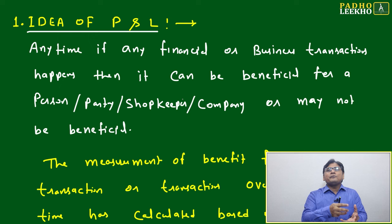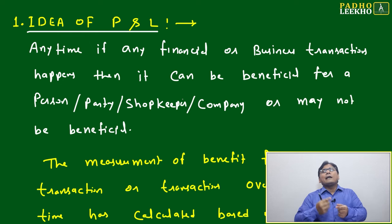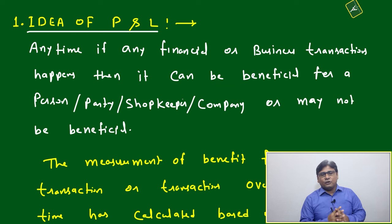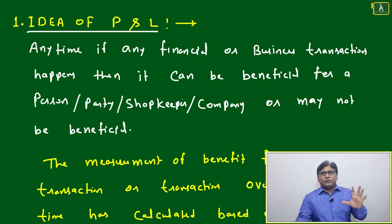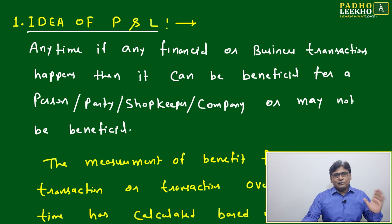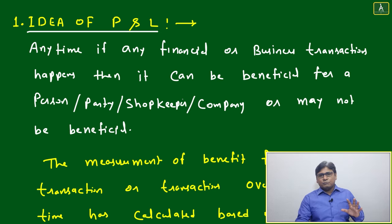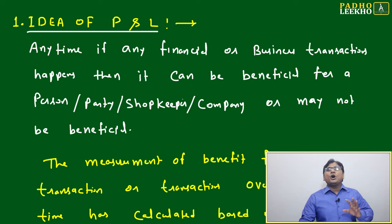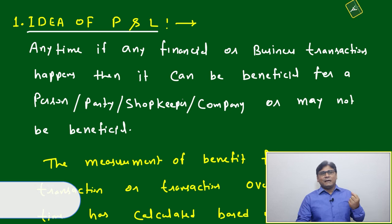Every transaction can be evaluated individually for profit or loss, or as a collection of transactions over a period of time to calculate cumulative profit and loss. Simply put, we are calculating how much we put into the business and how much comes out — input is your investment, output is your sales; input is your cost price, output is your selling price.